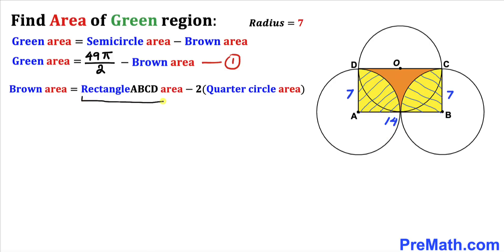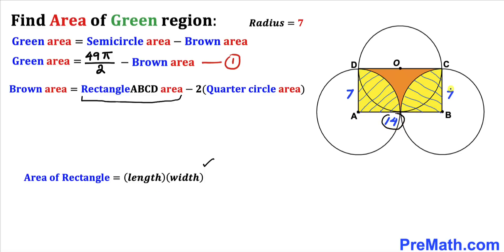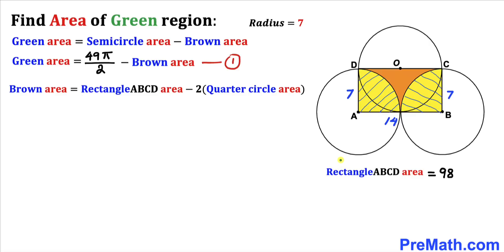Let's calculate the area of rectangle ABCD. Recalling the area of rectangle formula: Area = length × width. In our case the length is 14 and the width is 7, so the area of rectangle ABCD is 14 × 7 = 98 square units.